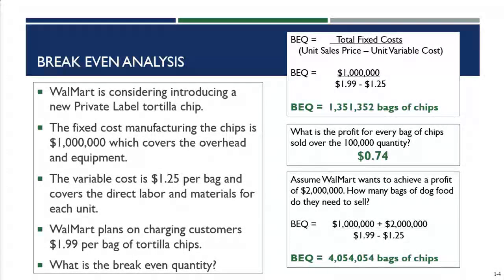This chip is only being introduced in supercenters, not other location types. That means each store only needs to sell 1,190 bags per year — about 99 bags of chips per month. Is that reasonable for Walmart? Absolutely. Walmart knows that if they introduce this private-label tortilla chip, they can easily sell 4 million bags in the first year and achieve $2 million in profit. That's how we use break-even analysis to determine if a new product introduction will be profitable.